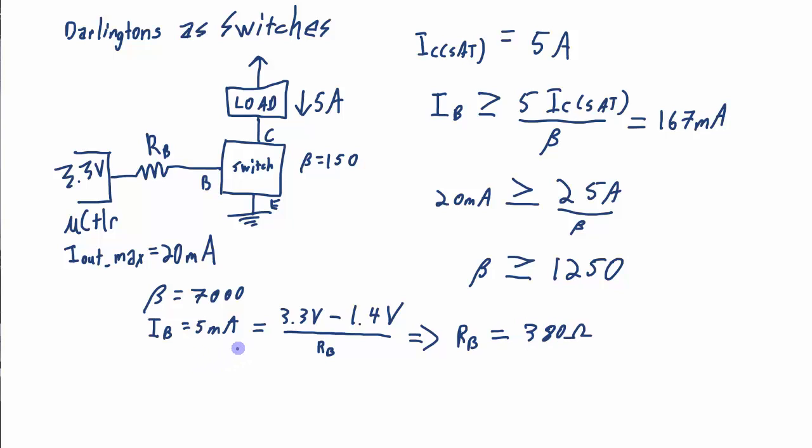One thing I should check is my IB value of 5 milliamps, is that sufficient to push my transistor into saturation? Well I want to check against this inequality. So is 5 milliamps greater than or equal to 25 over 7000? And this works out to about 3.6 milliamps. So yes, this check is true.